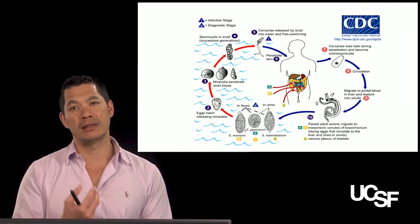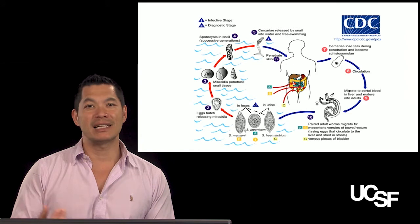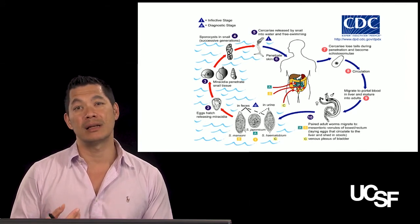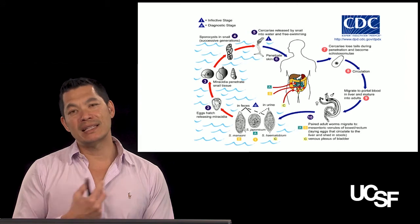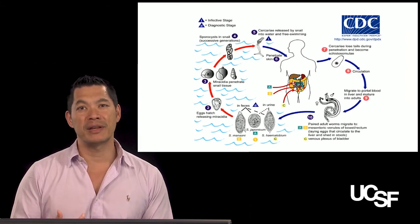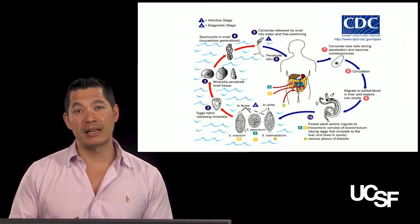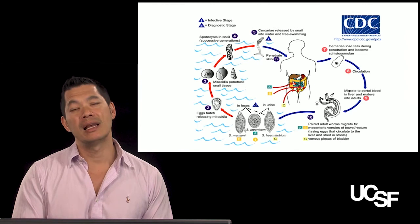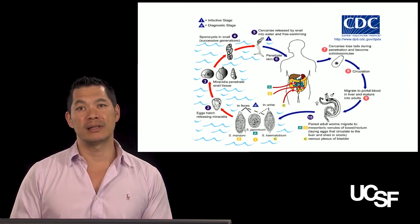Schistosoma haematobium loves the bladder and its venous plexus. Eggs laid there by adult worms cause an inflammatory reaction, which can cause hematuria and is a major risk factor for bladder cancer. When eggs hatch into larvae and cercariae in fresh water, the cercariae infect snails. The snail is where the life cycle is completed, and snails then release multiple cercariae back into fresh water to infect humans.